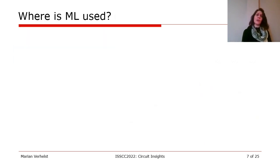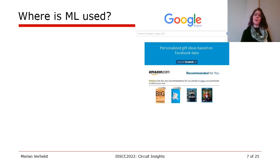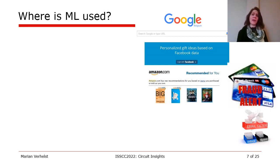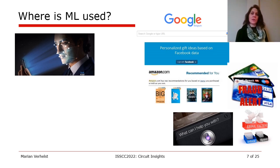These machine learning algorithms became very popular and are literally in everyday objects you find around you these days. Obviously every time you do a Google search or get a personalized Facebook or Amazon recommendation, you are using ML in the background. Also every bank transaction you do and every email that you receive has gone through a machine learning model to detect fraud or spam. Every time you unlock your phone with your face or talk to your phone with a speech command, you use a machine learning model.